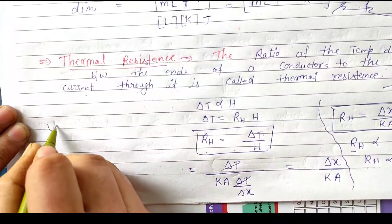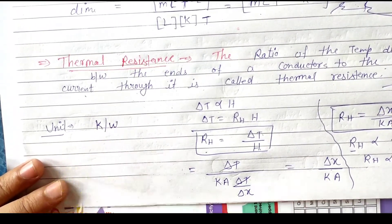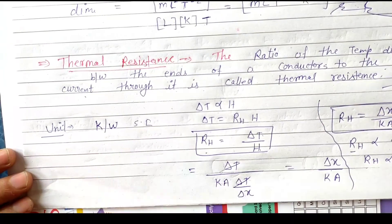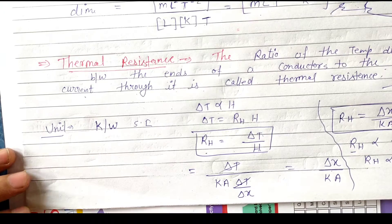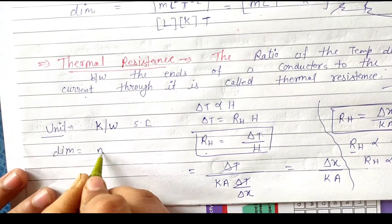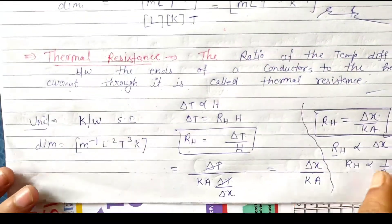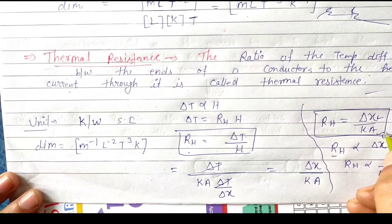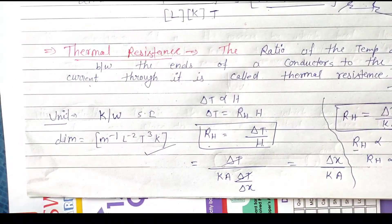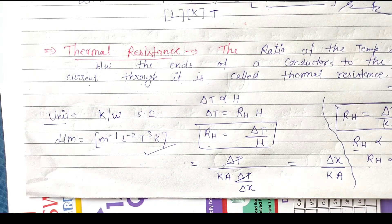The unit of thermal resistance is Kelvin per watt in SI units. In CGS units, it can be converted accordingly. The dimension of thermal resistance is M⁻¹L⁻²T³K. R_H depends on: length (longer length means higher resistance), area of cross-section (smaller area means higher resistance), and the nature of the conductor (represented by k, thermal conductivity).